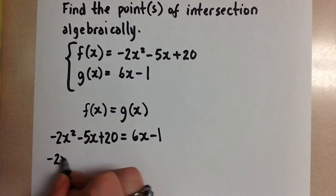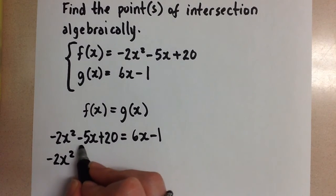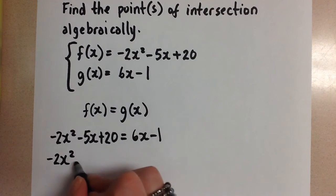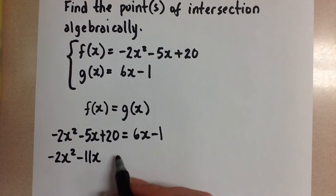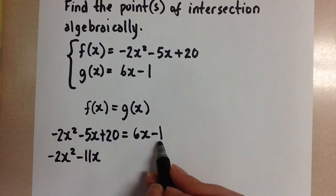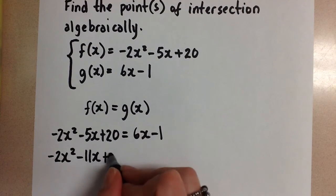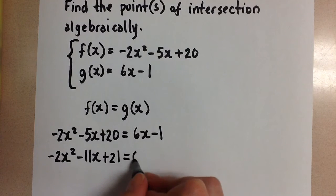So we'll do that, negative 2x squared minus 5x minus 6x is going to give us minus 11x. And then plus 20 plus 1 is plus 21 equals 0.